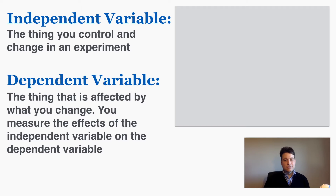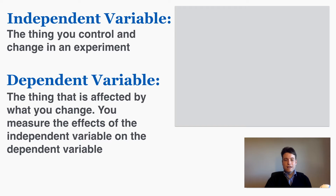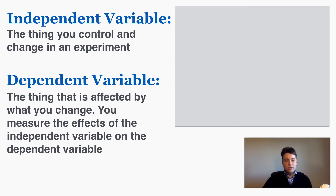One way that I like to think about this is that if you're an independent person you don't depend on other people. You can choose what you do and when you do it. So that's similar to the independent variable — the independent variable depends on nothing else except for your choices. You control what the independent variable is, what the value of that variable is. The dependent variable in contrast is like a dependent person. It depends on other things, it depends on other factors in your experiment.